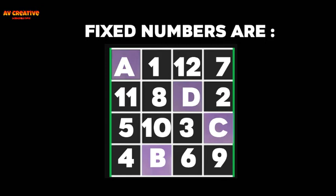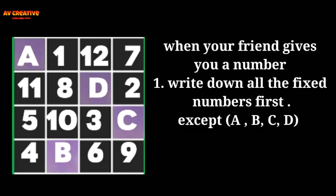2, 5, 10, 3, 4, 6, and 9. When your friend gives you a number, write down all the fixed numbers except A, B, C, D.